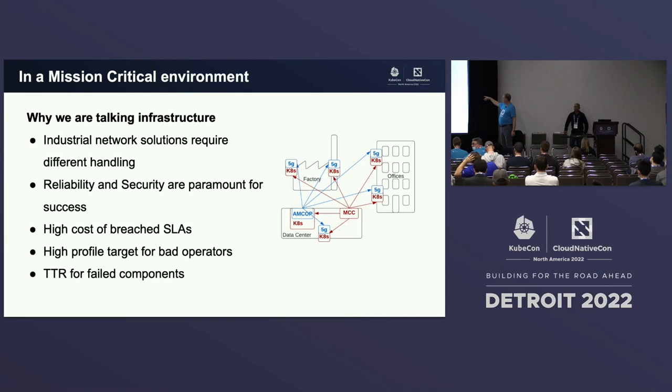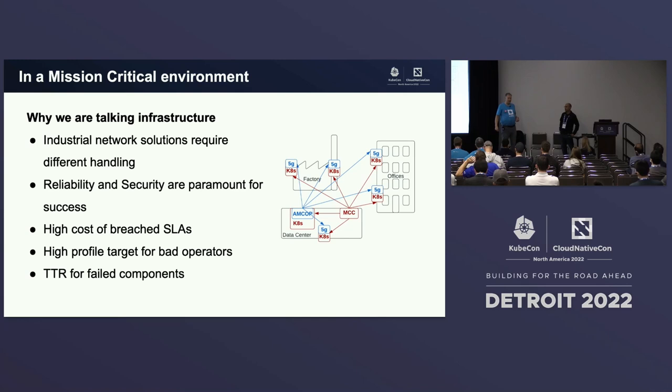Each of those 5G Kubernetes applications has a connection to the radio for the local environment. You can run more than one radio on a single edge — so if you had a factory building and want antennas across the whole building, you can have multiple antennas all running off one Kubernetes cluster.